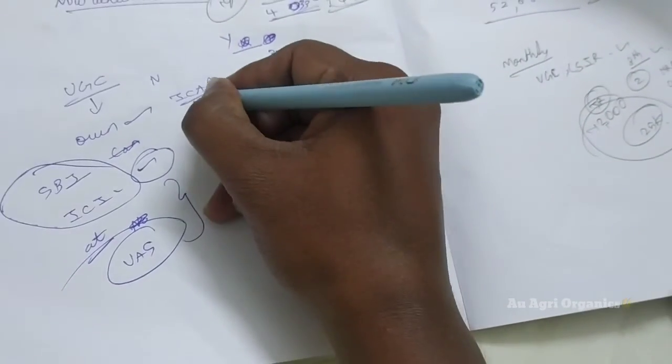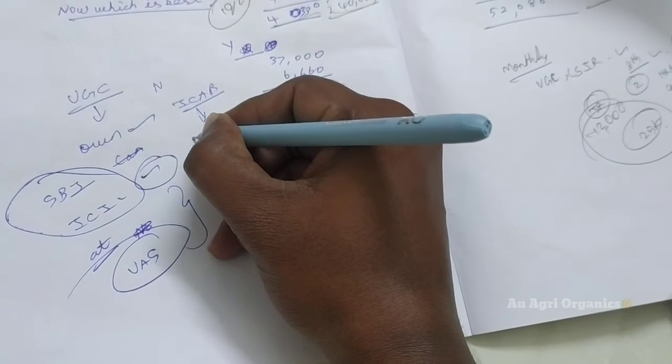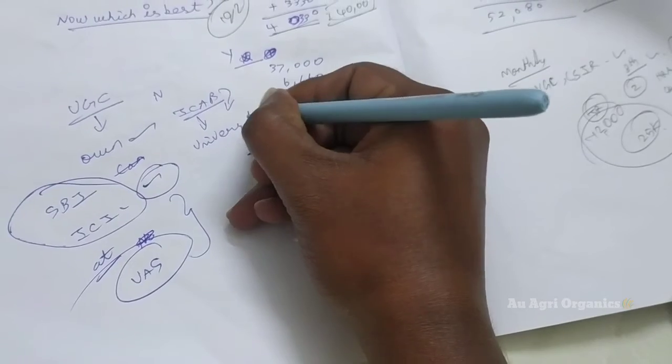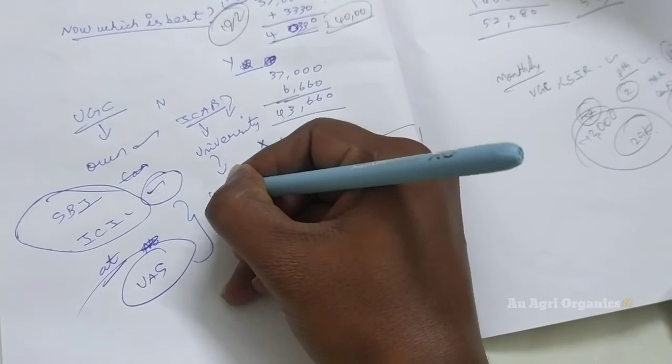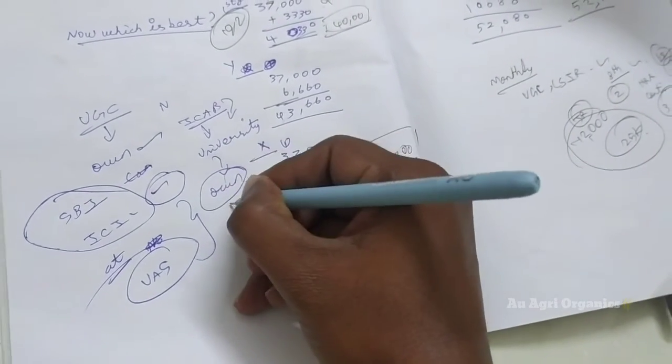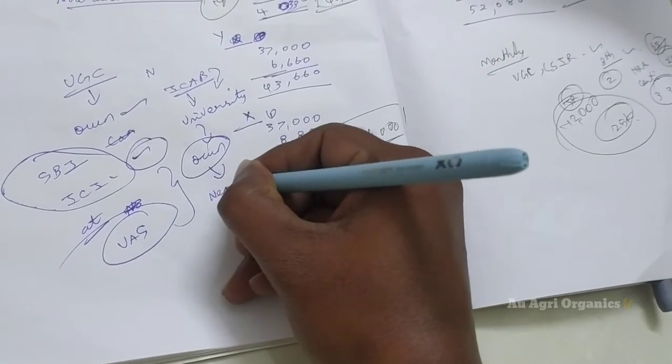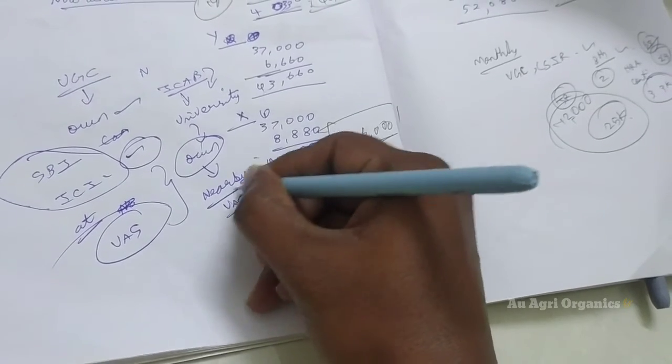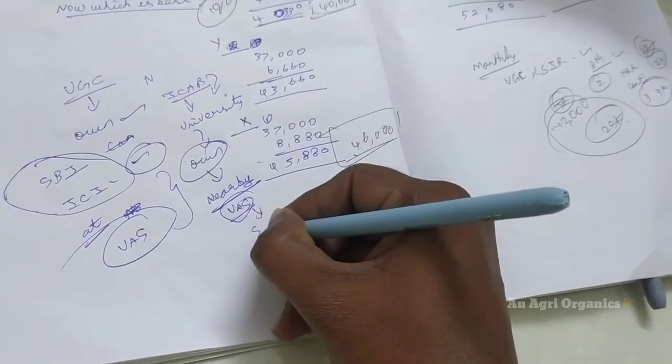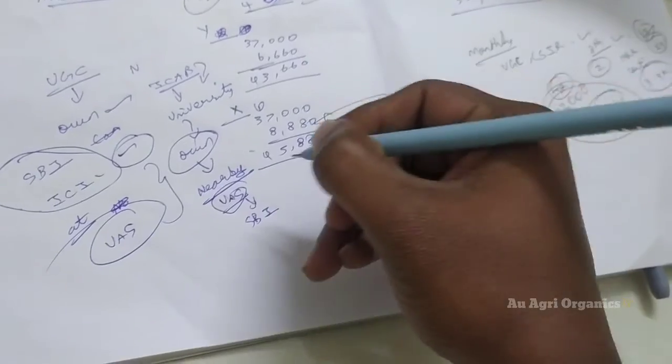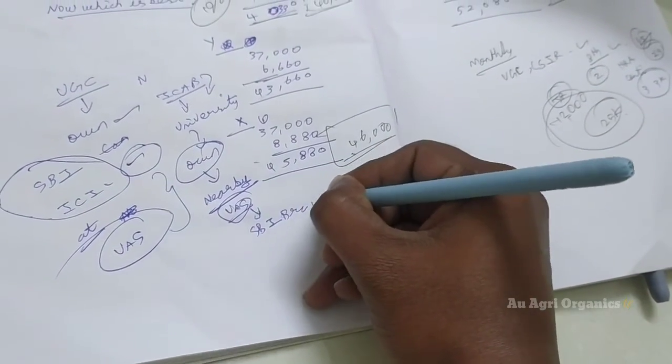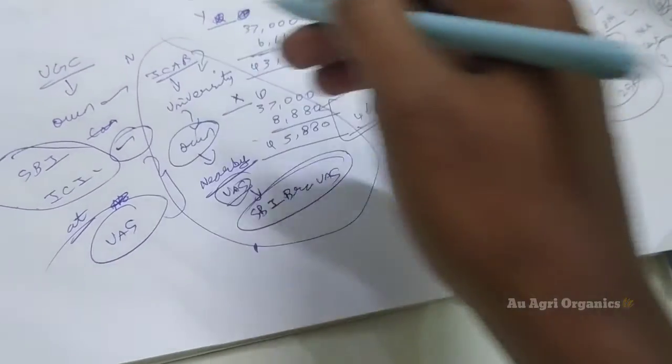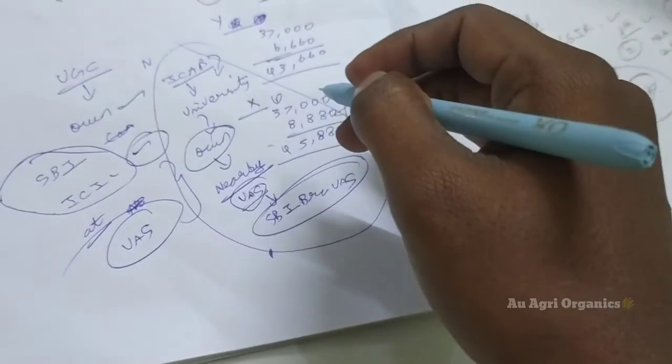But if you are getting this ICAR fellowship, your fellowship will come to your university only. First, it will be dispersed by ICAR to your university account. Then university will disperse to your own account. So for this, you have to have bank account nearby. So for example, if you are studying at UAS Dharwad, you have to have bank account of SBI branch. That too, you have to give only this SBI. SBI branch of UAS Dharwad. Whatever may be the university, they may have certain banks in their campus. So you have to have the account of that particular bank only.